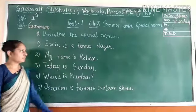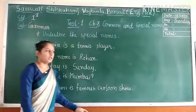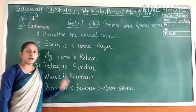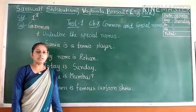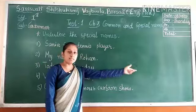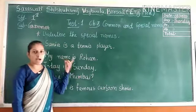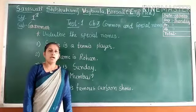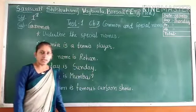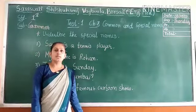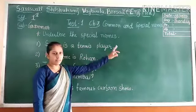Now let's do another exercise from Chapter 3: Common and Special Names. Common names means the common name of people, animals or things. Special name means any specific name of people, animals and things. Common nouns always begin with a small letter, and special names always begin with capital letters. For example: days of the week, months of the year, any city's name, any festival's name — they are all special names.